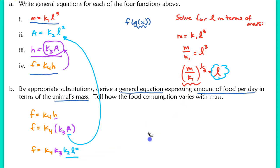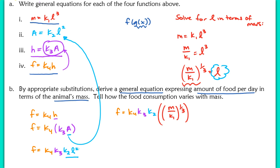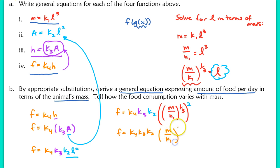Now substituting L equals (M / K₁)^(1/3) into our food equation, we replace L squared with that expression squared: F equals K₄ times K₃ times K₂ times (M / K₁)^(1/3) raised to the 2nd power. Multiplying the exponents gives (M / K₁)^(2/3), so F equals K₄ times K₃ times K₂ times M^(2/3) over K₁^(2/3).